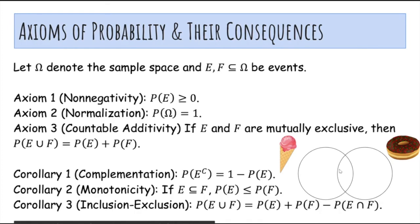So for example, the probability of ice cream or doughnut here is the probability of ice cream, so that's this circle, plus the probability of doughnut, which is this circle, but you have to subtract off the intersection because that was accidentally counted twice.